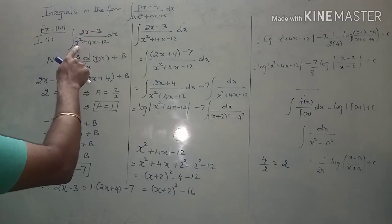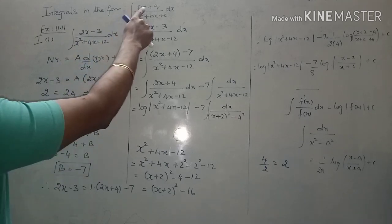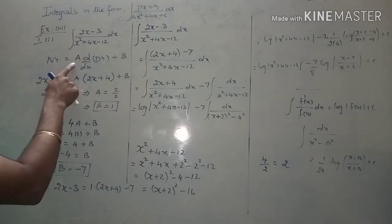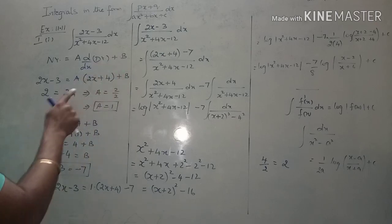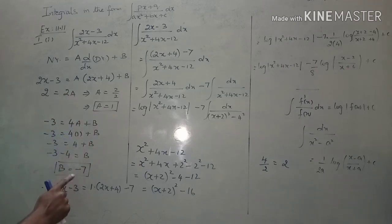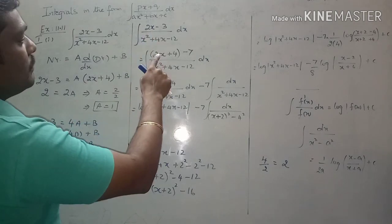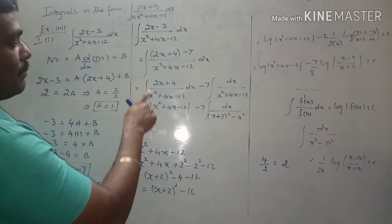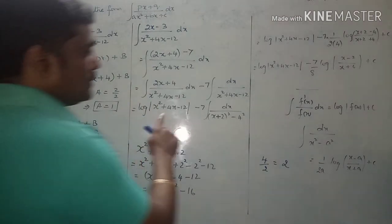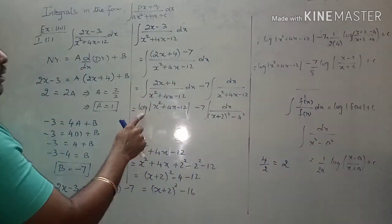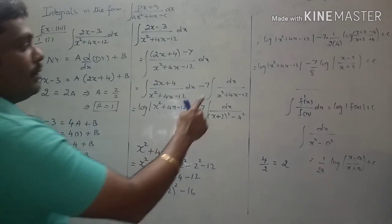So, to summarize: the integral of (2x minus 3)/(x² + 4x minus 12) dx is of the form (px + q)/(ax² + bx + c). First step: write the numerator as A times the derivative of the denominator plus B. We differentiate and equate x-coefficients on both sides to get A, then equate constants to get B. Then rewrite the numerator as two terms, split into two integrals. The first integral always gives log of the denominator.